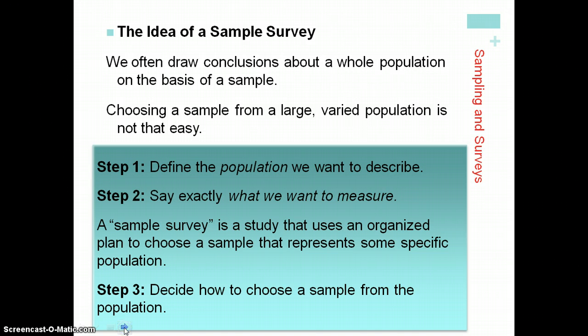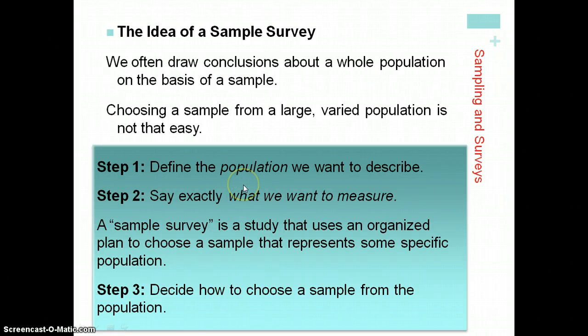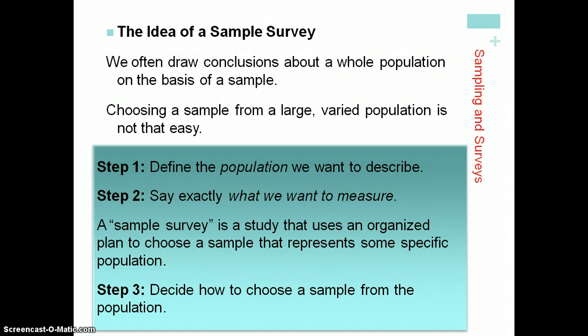When we design a survey, we want to make sure we know the population of interest — it might be all registered voters, or it might be female voters. We need to say exactly what we want to measure and make sure we come up with questions that will address that. The questions need to be properly worded, and we'll talk about how questions can be worded poorly so they won't get you the information you're looking for.